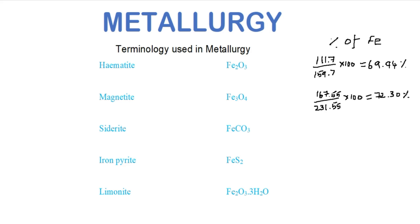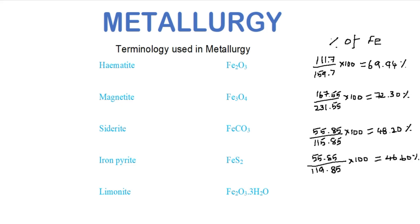In magnetite, the percentage of iron is 72.3%. In siderite (ferrous carbonate), the percentage of iron is 48.2%. In iron pyrite, it is 46.6%, and in limonite it is 52.27%. From this it is clear that magnetite contains a larger amount of iron, but the principal ore of iron is hematite, because hematite exists in larger amounts — its availability is higher compared to magnetite.